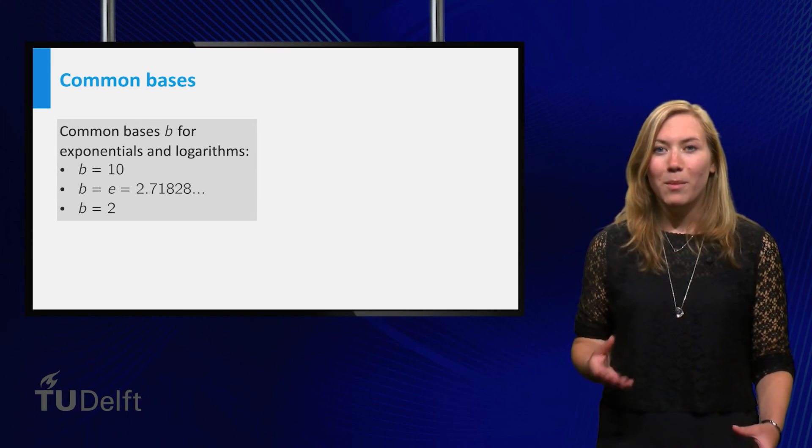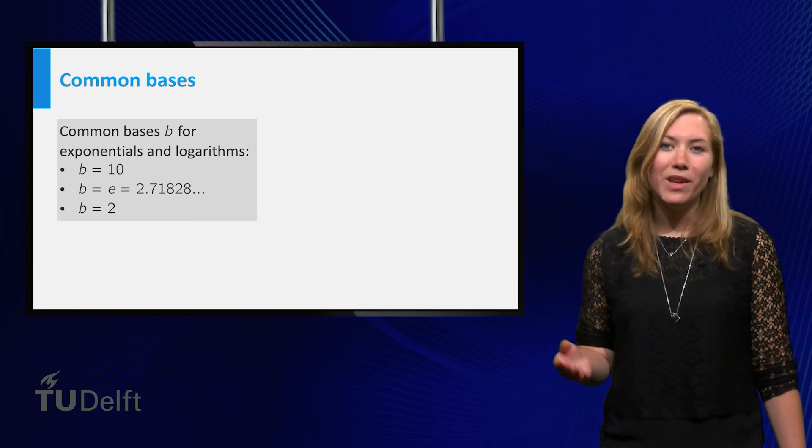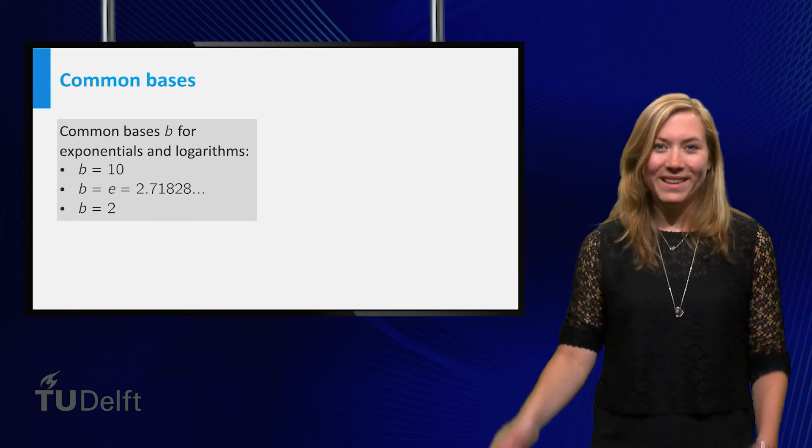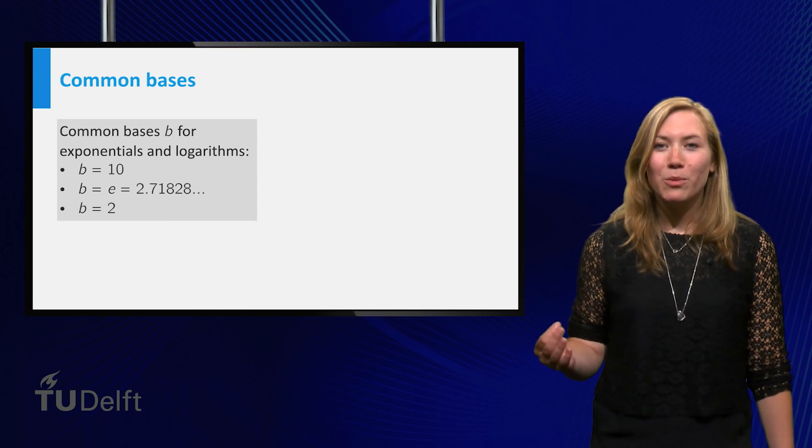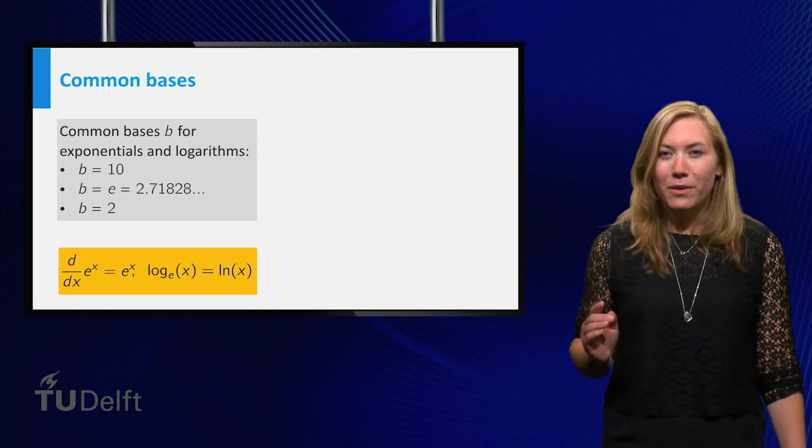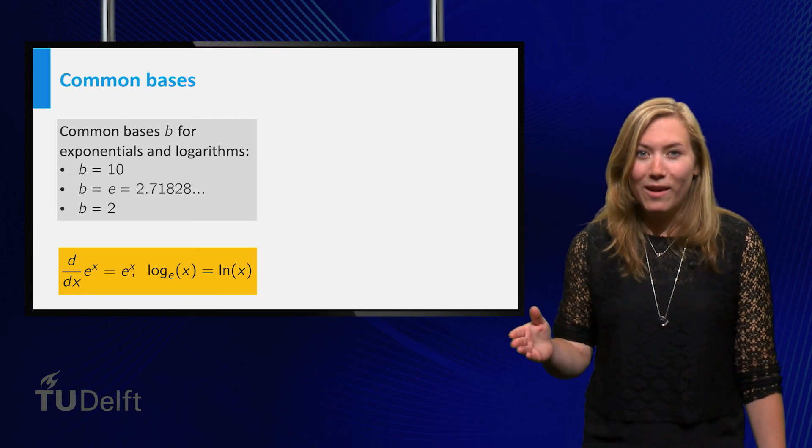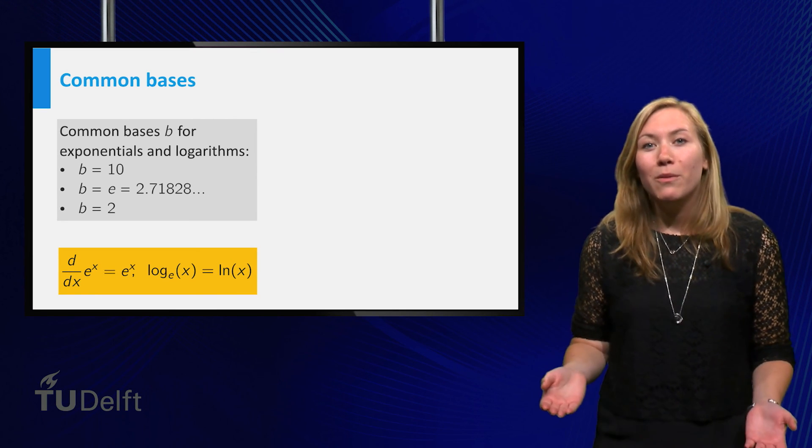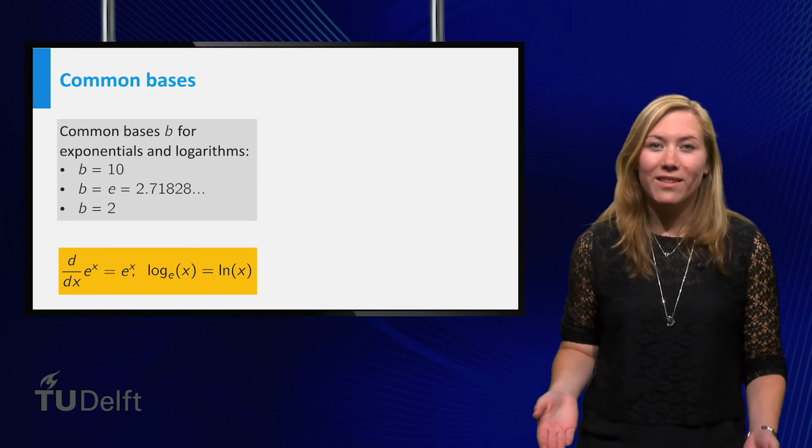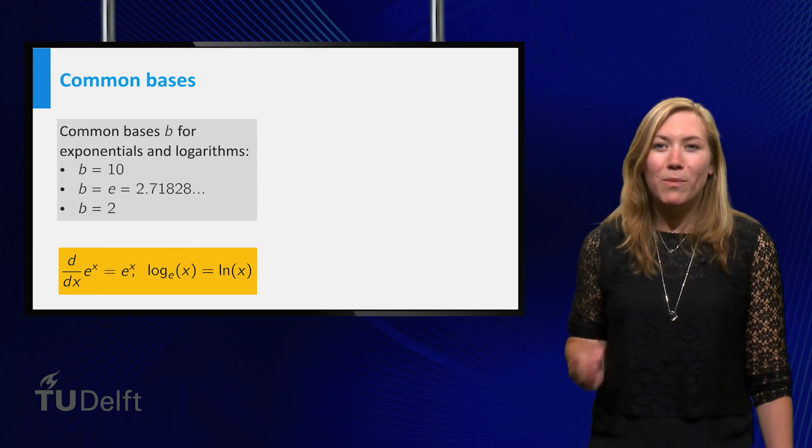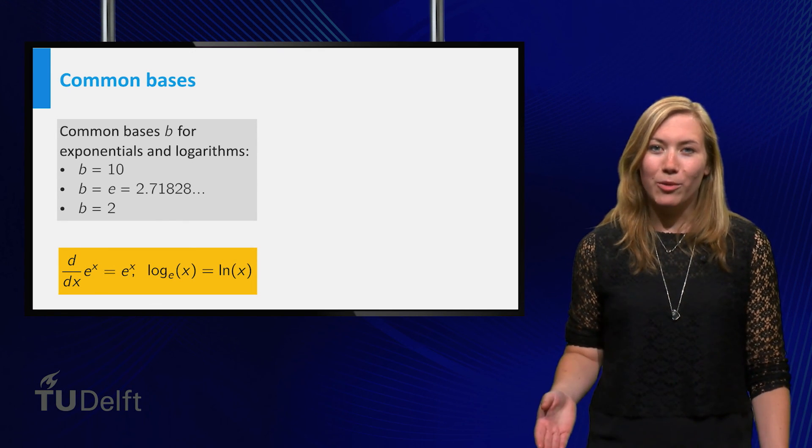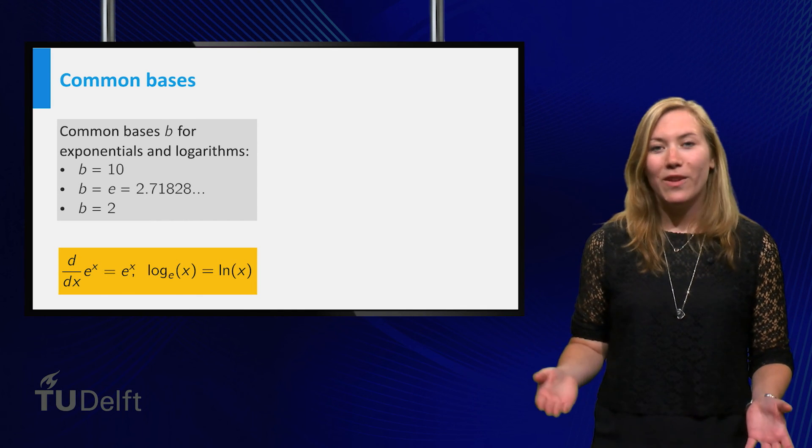Another common base is e equals 2.718 etc. The base e has the special property that the derivative of e to the power x is e to the power x itself, which makes it very well suited for use in calculus. The logarithm with base e is called the natural logarithm and is usually written as ln.